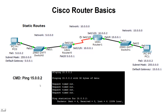Next we're going to try to ping. We haven't set our static routes yet, and if we ping our PC on the far side, which is set at 15.0.0.2, we'll notice that our ping is not successful. We get these request timeouts, so we're not getting any return — 4 lost, or 100% loss. That's because we haven't yet set the static routes in these two routers.